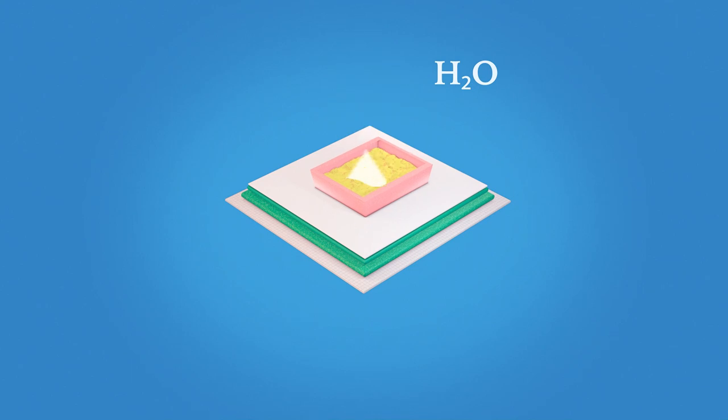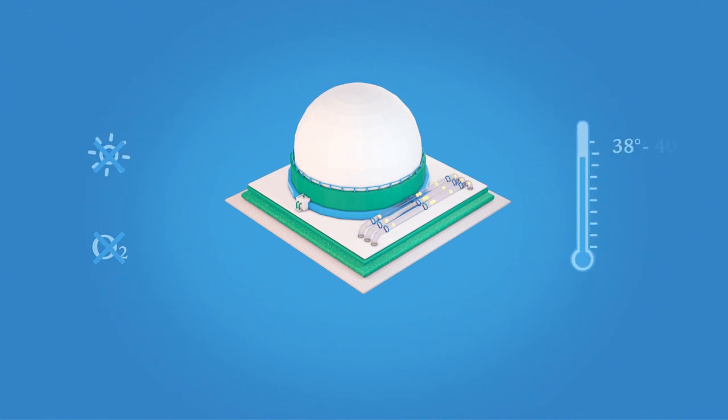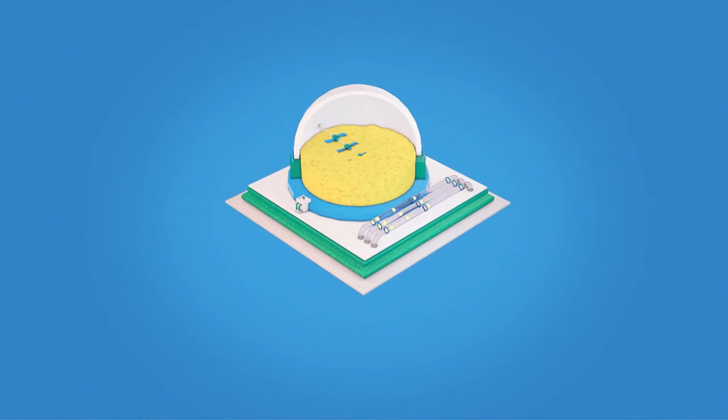This mixture is then fed into a dome-shaped fermenter that has no light or oxygen, where it is heated by waste heat from the power engines. It is also stirred here, much like a giant kitchen mixer, so that the food is spaced out evenly.